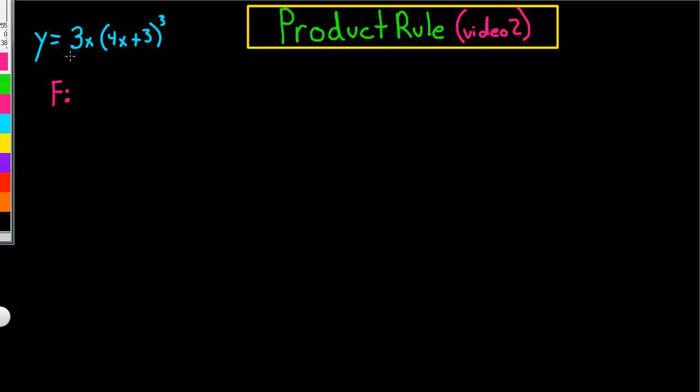So, this is going to be f, so we got 3x, and then f prime is going to be the derivative of this, so it's just going to be a 3.